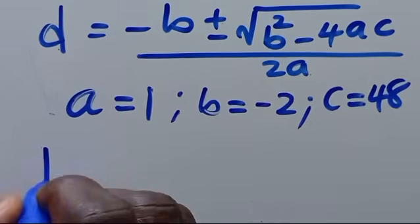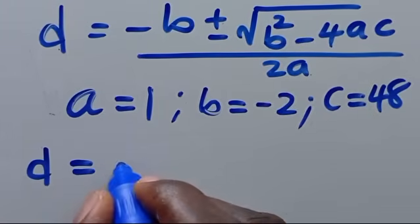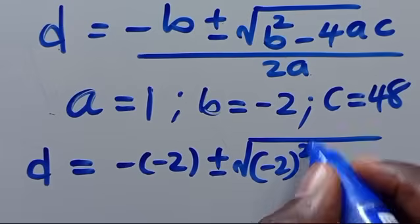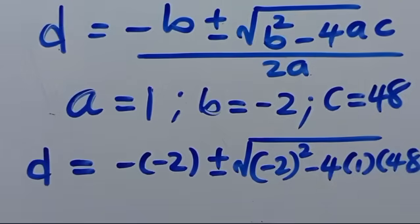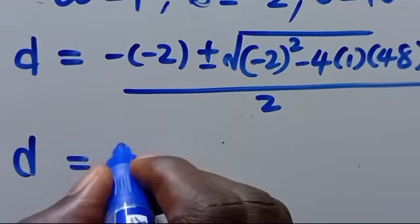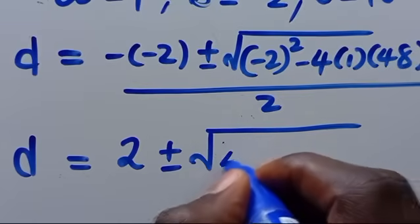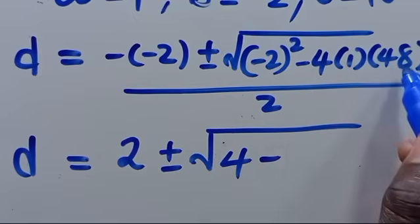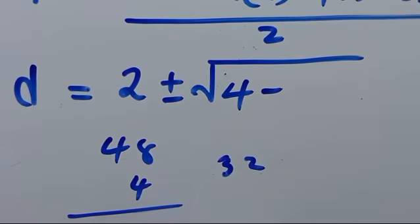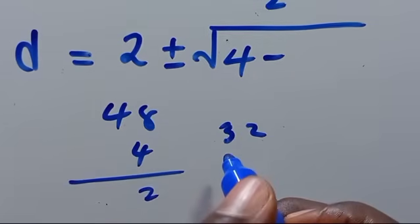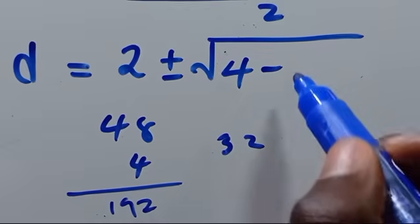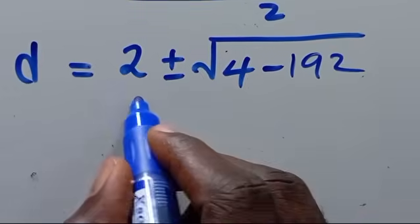Substituting in: d equals negative of minus 2, plus or minus the square root of (minus 2) squared minus 4 times 1 times 48, all divided by 2. That gives us 2 plus or minus square root of 4 minus 192, over 2.